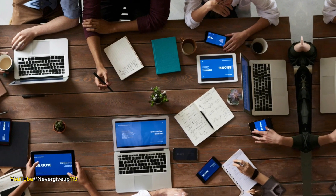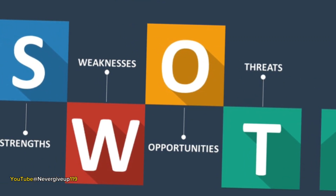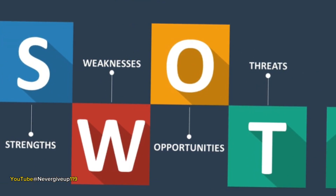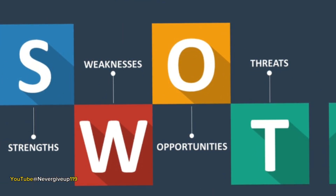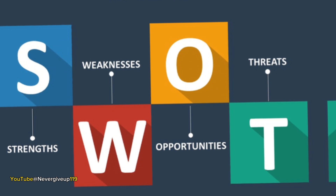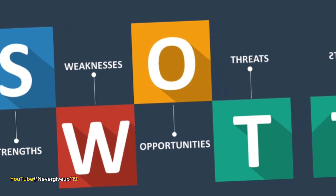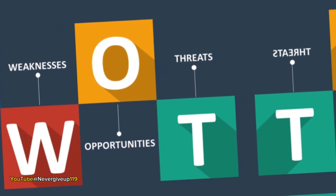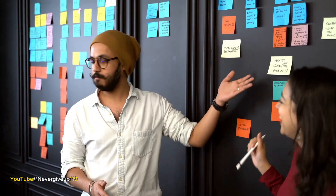Step 1: Conduct a SWOT Analysis. A SWOT analysis is a strategic planning technique that looks at the strengths, weaknesses, opportunities and threats of an idea or strategy.